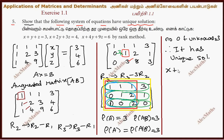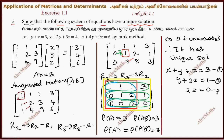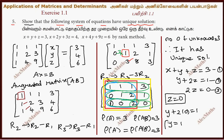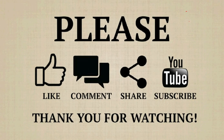Now solving by back substitution: the first equation is x plus y plus z equals 3; the second equation is y plus 2z equals 1; the third equation is 2z equals 0. So z equals 0 divided by 2, giving z equals 0. From the second equation, y plus 2 times 0 equals 1, so y equals 1. From the first equation, x plus 1 plus 0 equals 3, so x equals 2. The solution is x equals 2, y equals 1, z equals 0. Thank you.